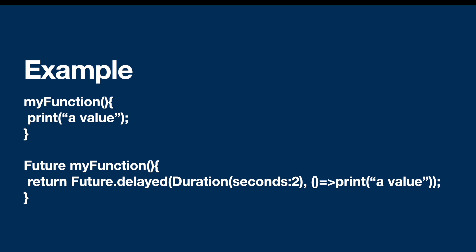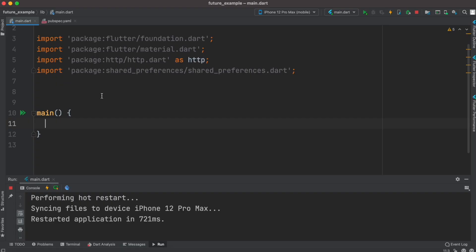Here is a simple, ordinary function that just prints a value. To turn this into a future — a function that returns a future — you simply add the future keyword, return the value, and use Future.delayed to wait. For example, here we wait two minutes. You can only use this waiting behavior if you have the future keyword.